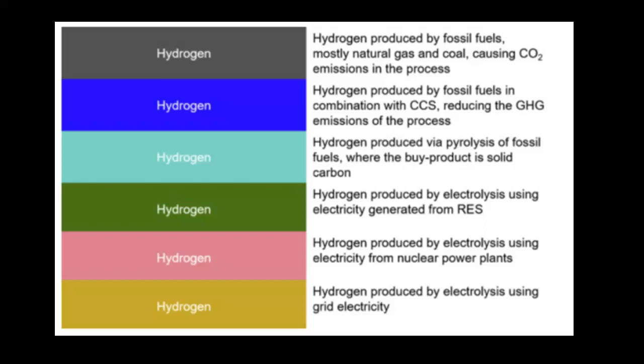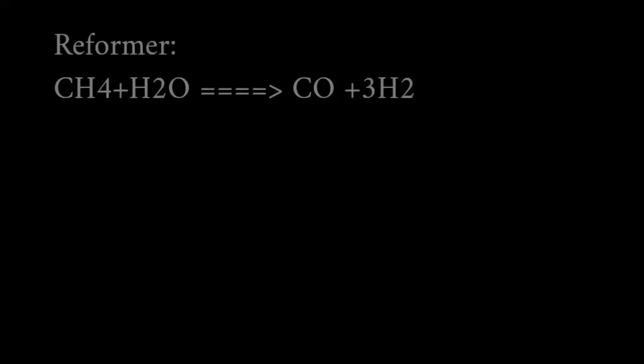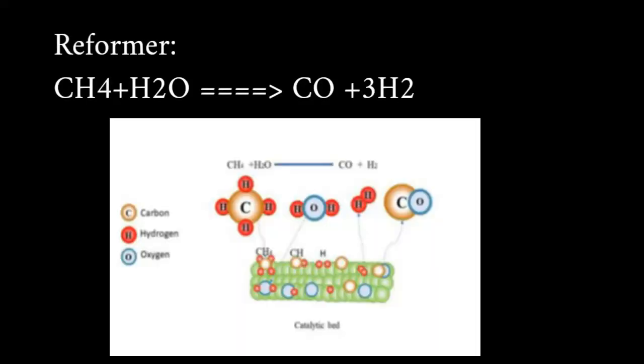Blue hydrogen is hydrogen produced from natural gas with a process of steam methane reforming, where natural gas is mixed with very hot steam and a catalyst. A chemical reaction occurs creating hydrogen and carbon monoxide.